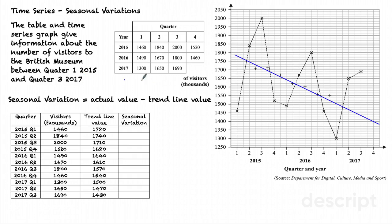The number of visitors is in thousands. Here is the information represented in the table. We have each of the years and we have each quarter, and then the values have been plotted on our time series graph. So at 2015 quarter one, 1460, and so on. Those points are joined with dotted lines because we're unsure of what's happened between those data points.